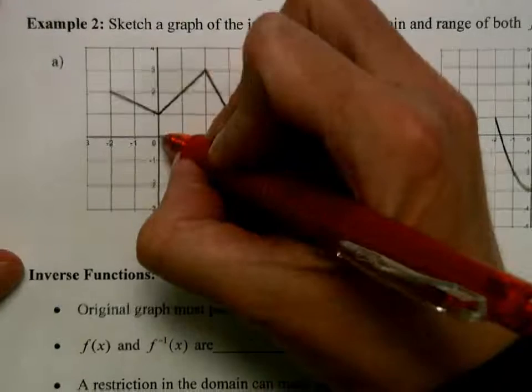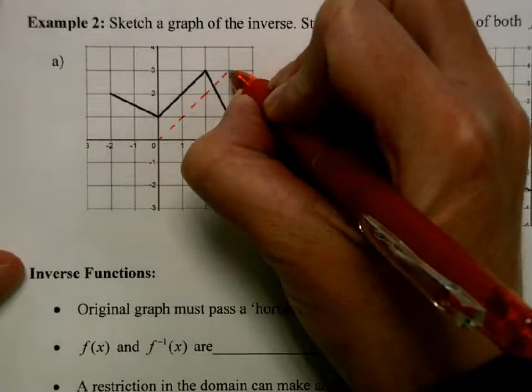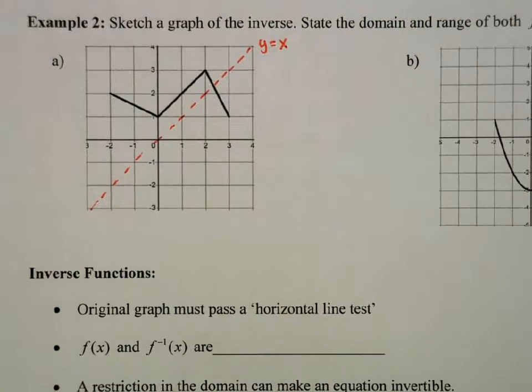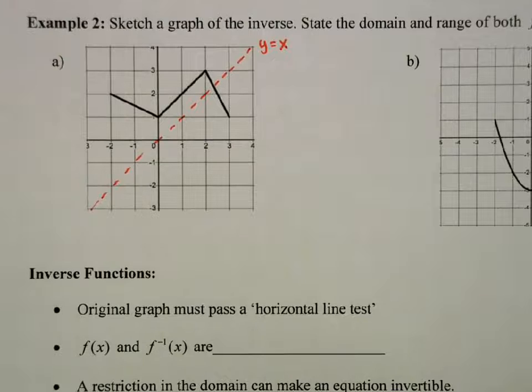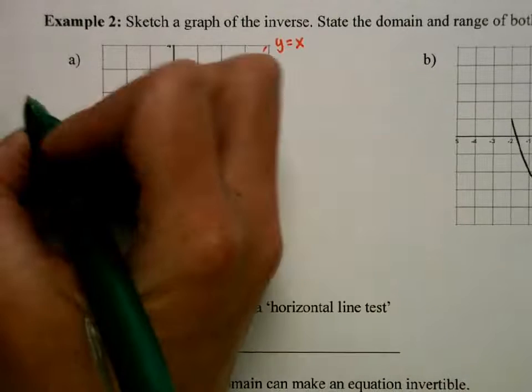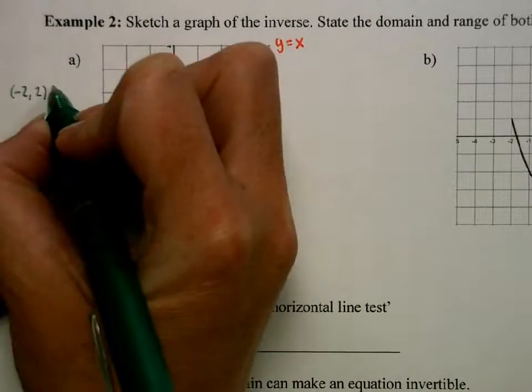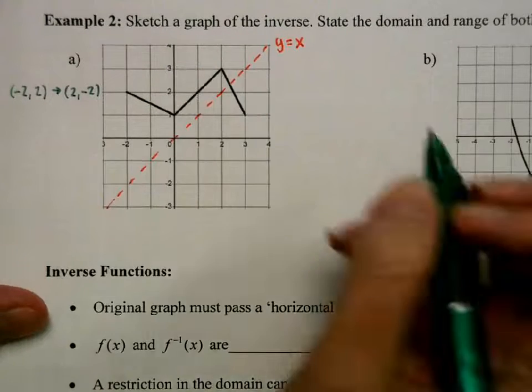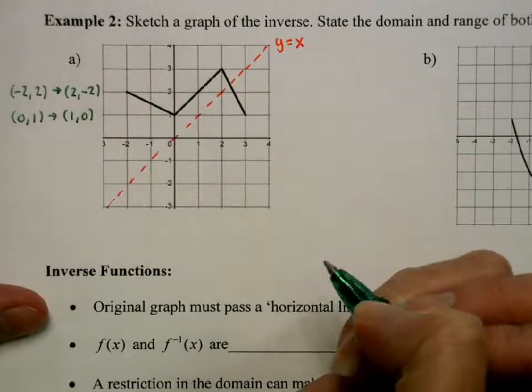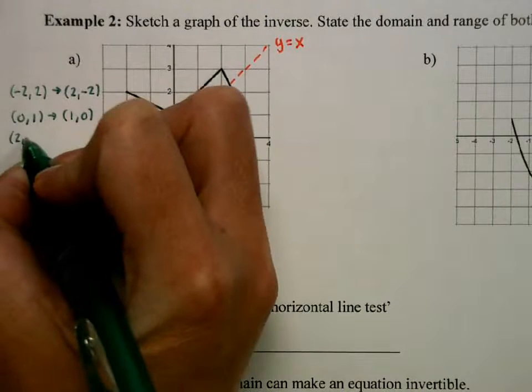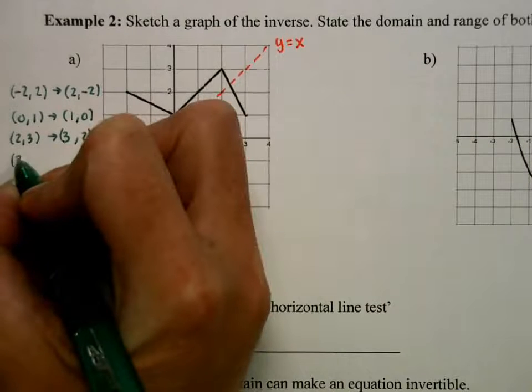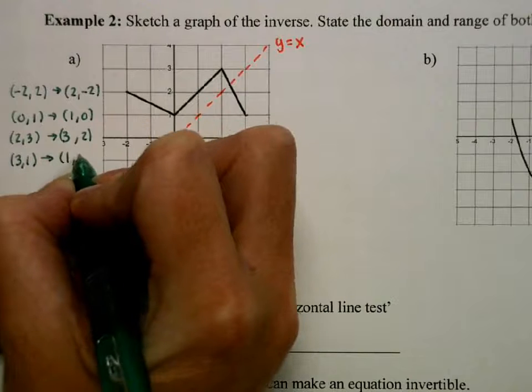Let's go ahead and graph some inverses. First I'm going to graph the line y equals x, because my whole graph is going to get reflected over there. What I'm going to do is I'm going to take some key points and just switch their coordinates. So the point (-2, 2) is going to go to (2, -2). This point at (0, 1) is going to go to (1, 0). We have a point at (2, 3), which is going to go to (3, 2). And then this endpoint here at (3, 1) is going to go to (1, 3).